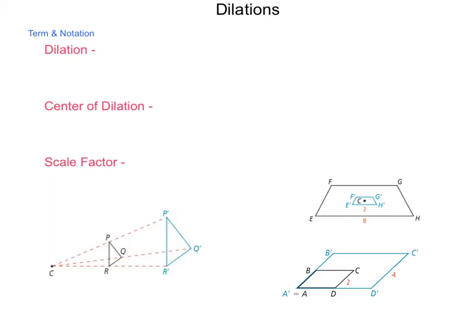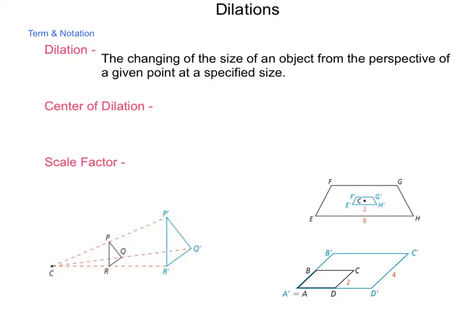Looking at some terms and notation, let's start out just with dilation itself. Dilation is the changing of the size of an object from the perspective of a given point at a specified size.